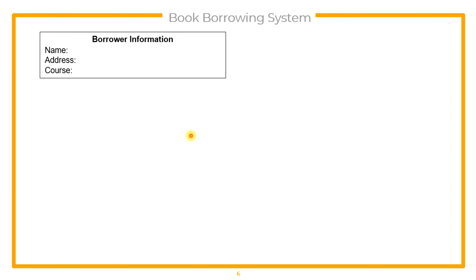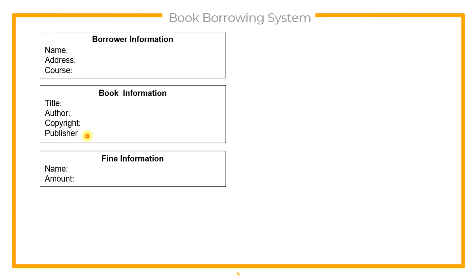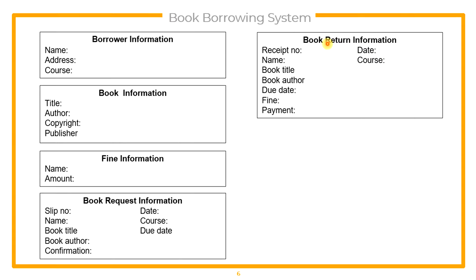Here we have an example of a Book Borrowing System. When a person wants to borrow for the first time, their name, address, and course will be recorded. Book information such as Title, Author, Copyright, and Publisher is also stored in the system. Fine information is stored for books returned overdue. Book request information is recorded when a borrower wants to borrow a book. There will be a possible payment if the borrower returns the book beyond the due date.